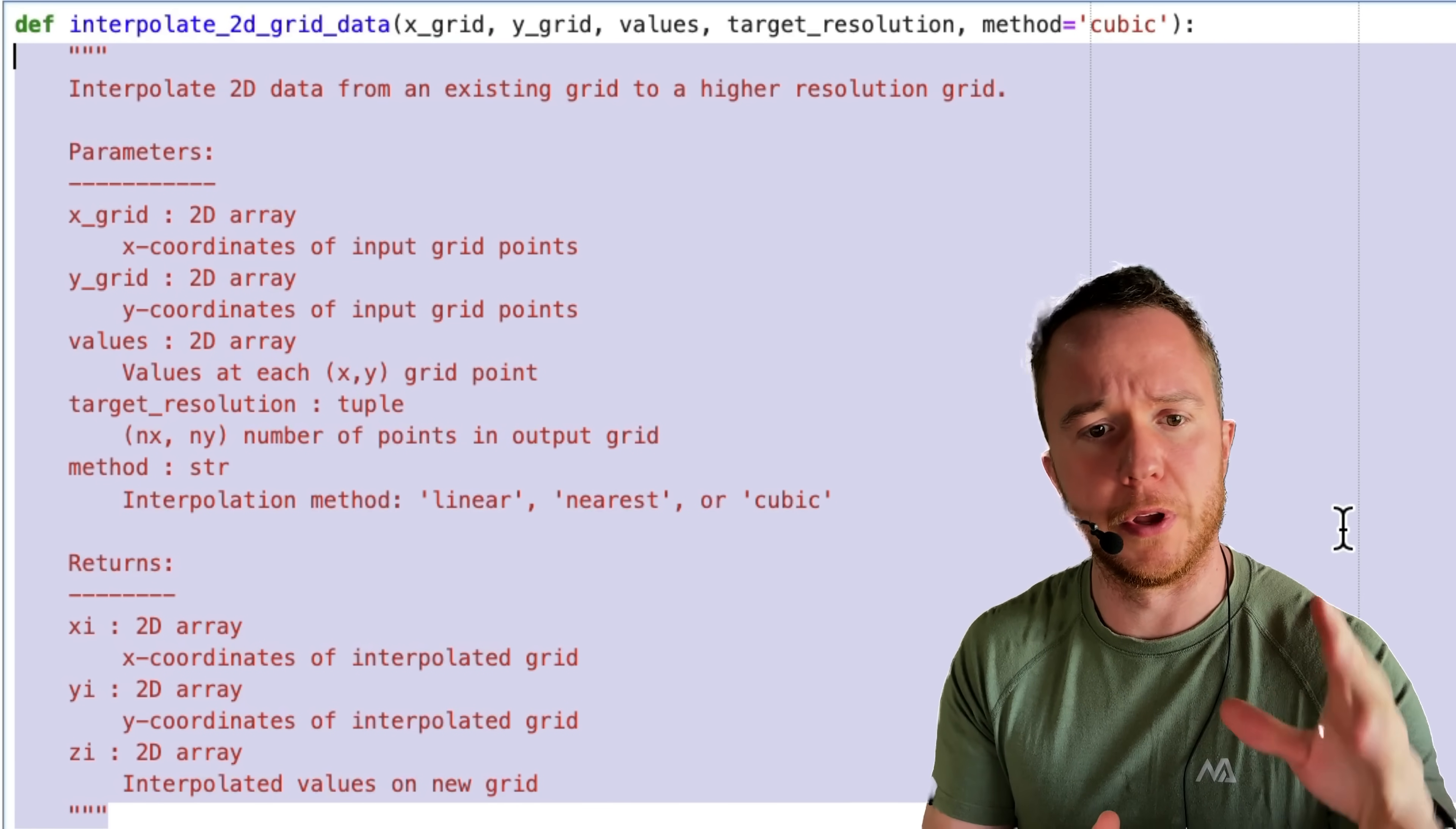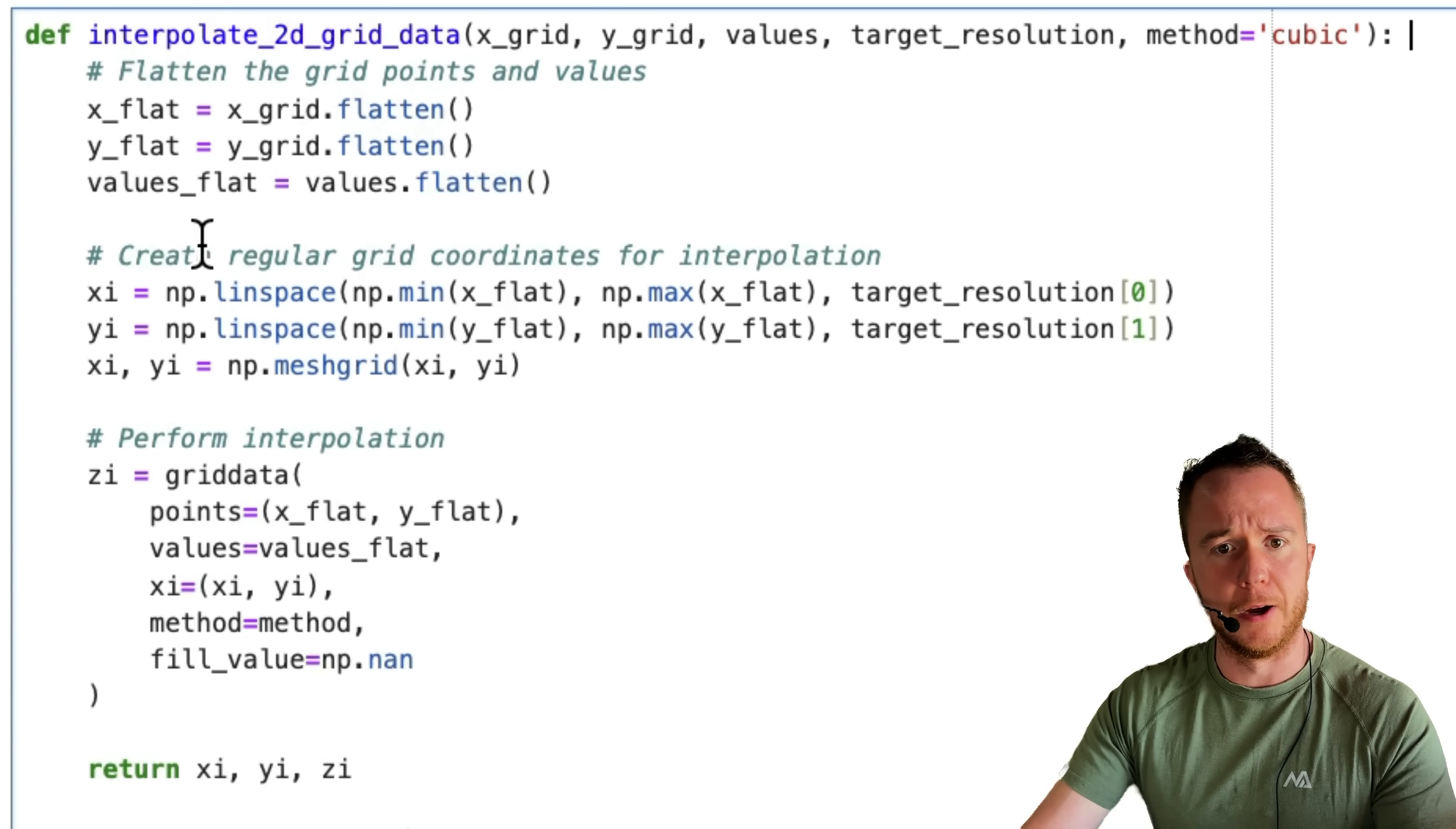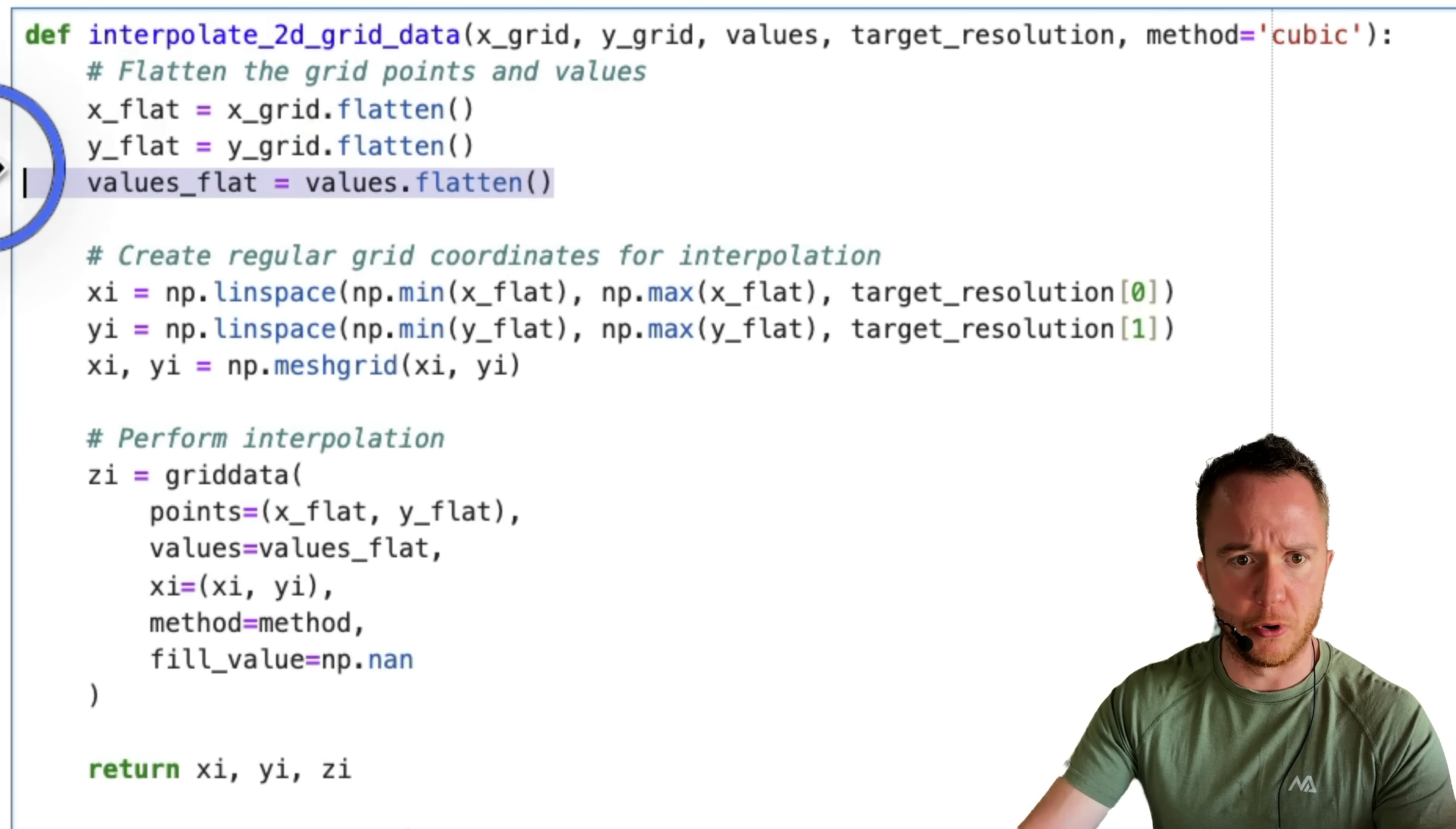However, in order for me to show you the entire function, I'm going to delete the comments so everything fits into one screen, and we can see what happens here. First, we flatten the grids, so we make one-dimensional arrays out of the two-dimensional arrays. We do that for x, for y, and also for our data.